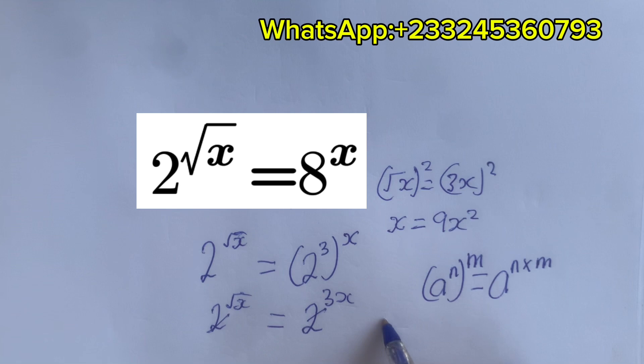Wow! This can be written as 9x² - x = 0.